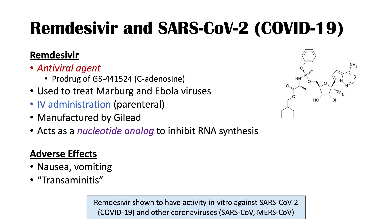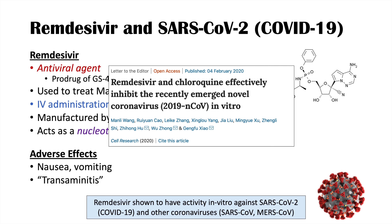There's also older data showing remdesivir has antiviral effects on other coronaviruses like SARS-CoV and MERS-CoV. This was originally shown in a paper published in February 2020 in Cell Research entitled 'Remdesivir and Chloroquine Effectively Inhibit the Recently Emerged Novel Coronavirus 2019-nCoV In Vitro.' Importantly, this data is in vitro — meaning it's in a petri dish or cell culture, not yet shown in humans. Some clinical trials are ongoing, but we're only in the preliminary stages.